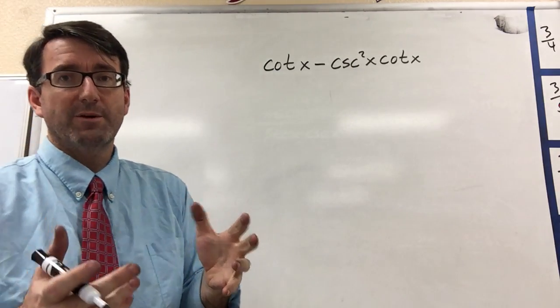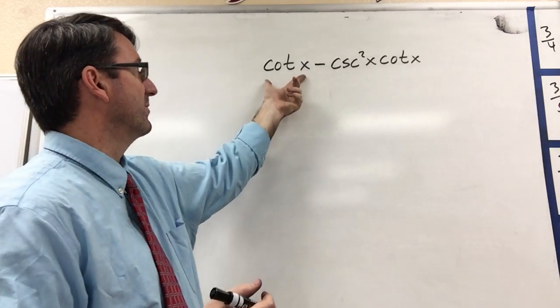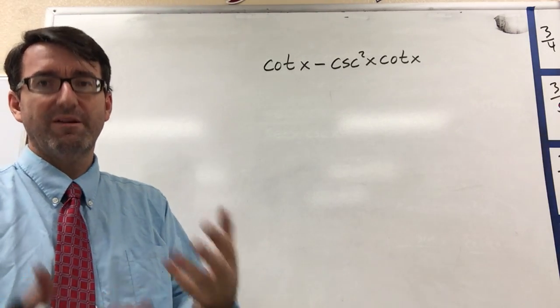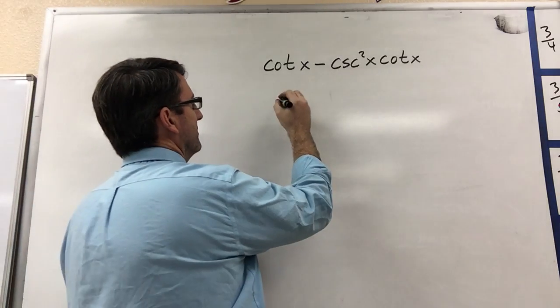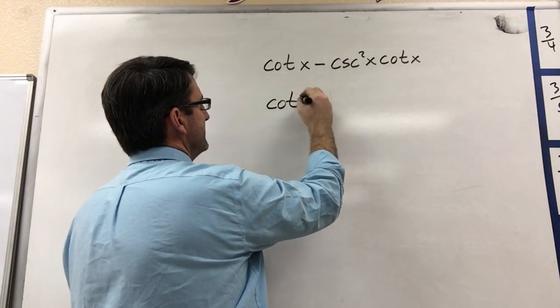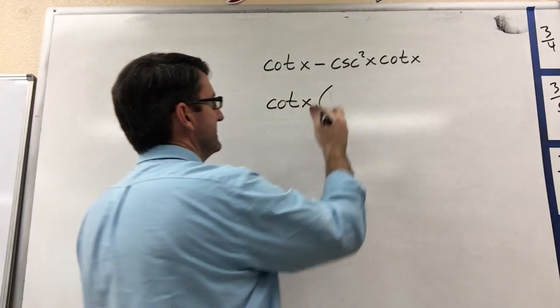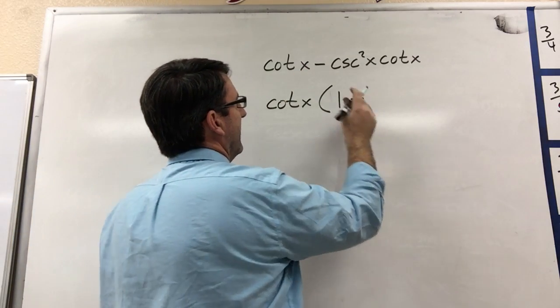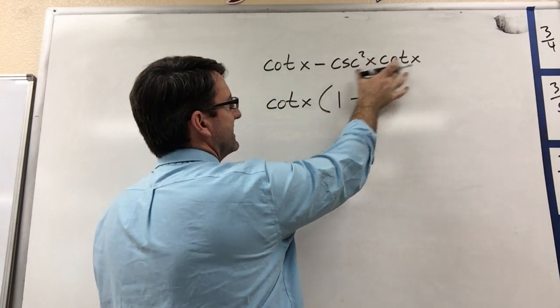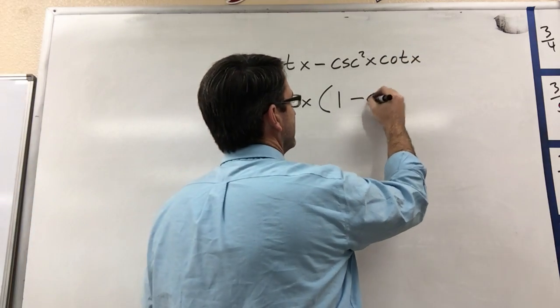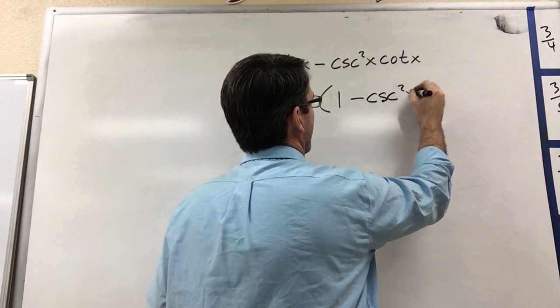The first thing that I notice about this expression is that we've got a cotangent x in both of the terms. So let's start by factoring that out. We'll put the cotangent x out front, and then cotangent x divided by cotangent x is 1, minus cosecant squared x times cotangent x divided by cotangent x is going to be cosecant squared x.